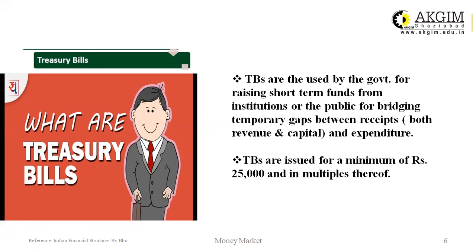The features of treasury bills include: they are negotiable securities; they are highly liquid as they are of shorter tenure and there is a possibility of interbank repos in them; there is an absence of default risk; they have an assured yield, low transaction costs, and are eligible for inclusion in securities for SLR purposes. The 91-day treasury bills are auctioned by the RBI every Friday, and the 364-day treasury bills are auctioned every alternate Wednesday, that is the Wednesday preceding the reporting Friday.